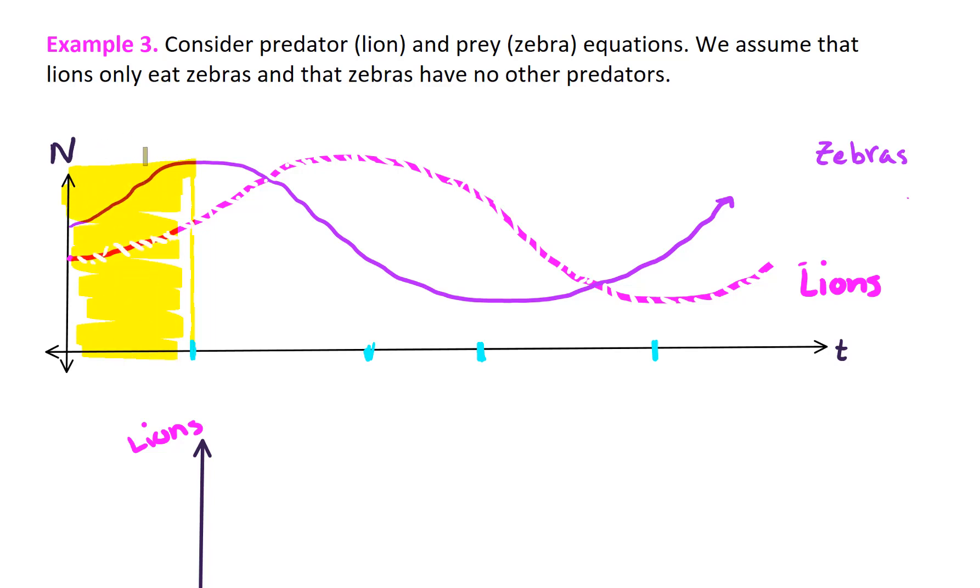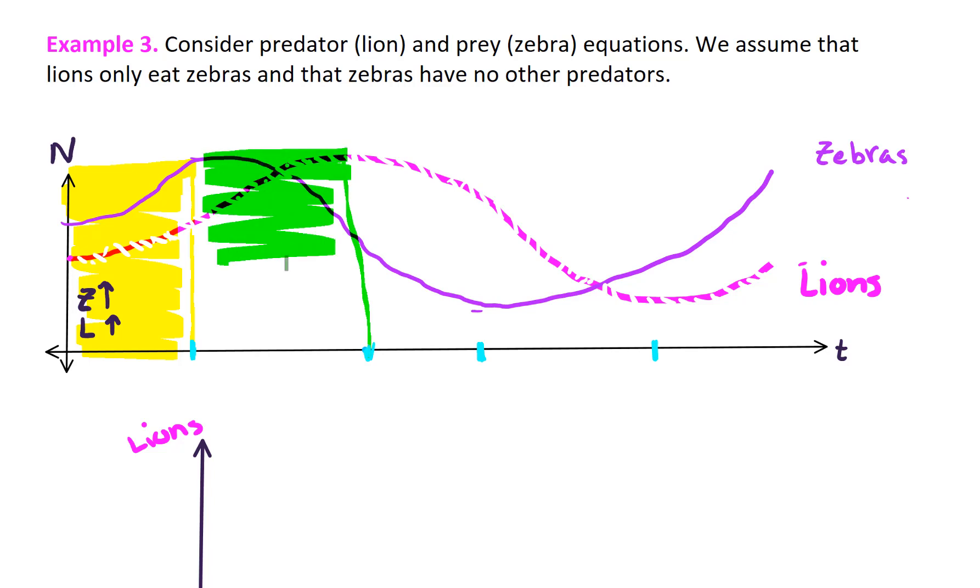Okay, in this region, both populations are increasing. So the zebras population is increasing. The lion population is increasing. And things are good for everybody. Look at our next region here. So in this next region, in this region right in here, what's going on is that the zebra population is decreasing. So our zebra population is going down. The lion population continues to increase. And there is heavy predation going on. And that's what's driving the zebra population down.